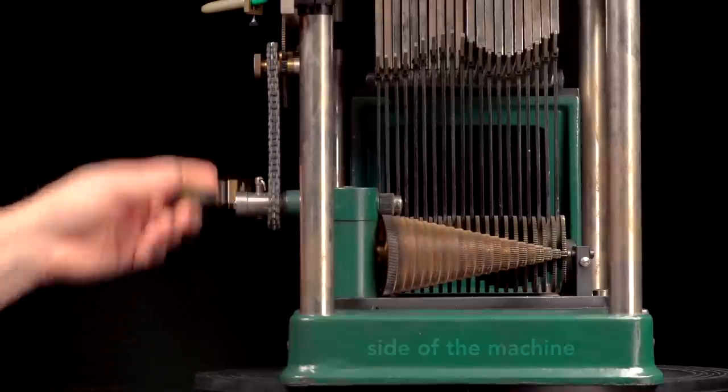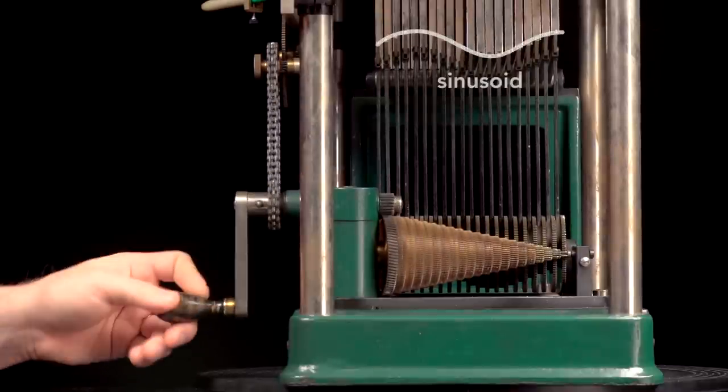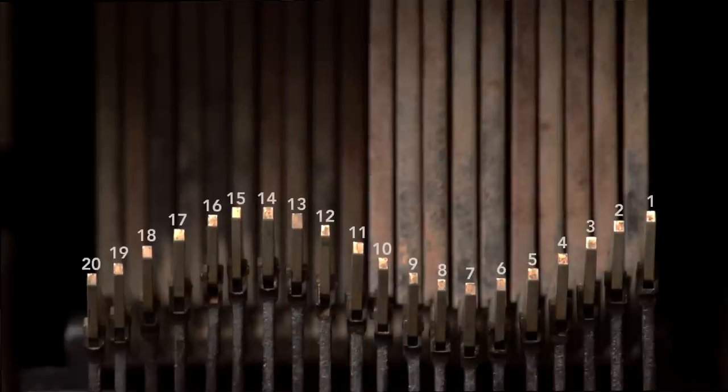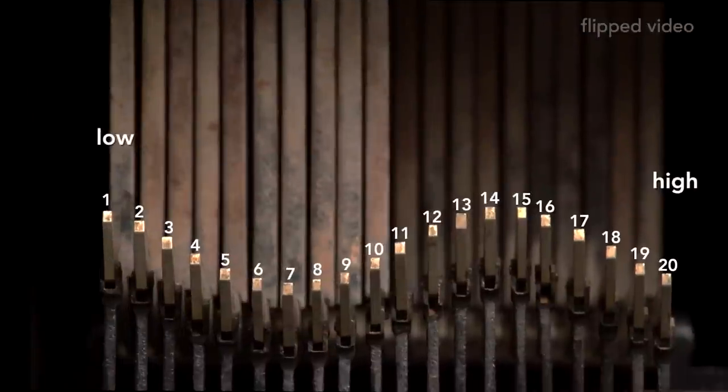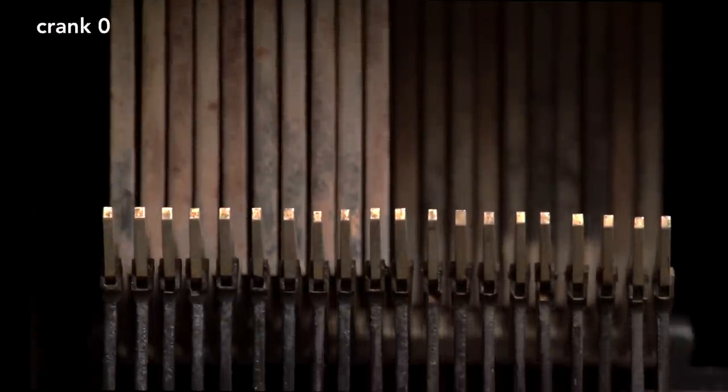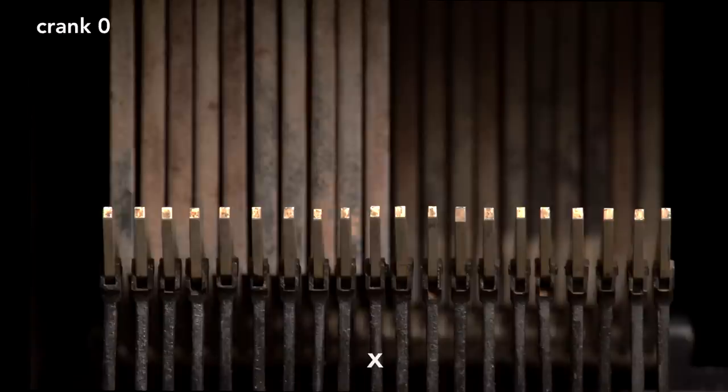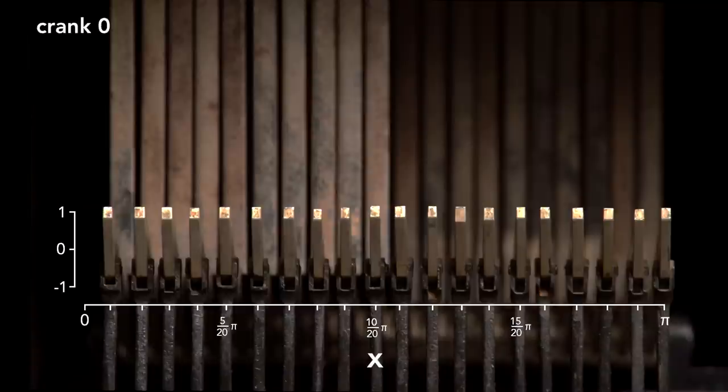As I turn the crank, the tips of the rocker arms form a sinusoid. The indices on the rocker arms run from high on the left to low on the right. I'll flip the video to make it a little more intuitive. When the rocker arm tips are lined up in a straight line, we'll call that crank number zero. If the horizontal axis runs from zero to pi, and the vertical axis from minus one to plus one, then we can describe the position of the rocker arms with a cosine.